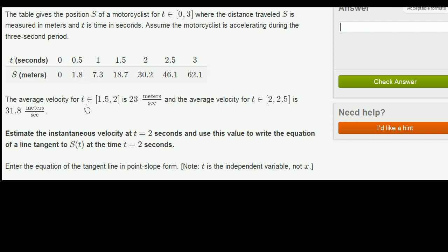The average velocity for t between 1.5 and 2 is 23 meters per second. So what they did over here is they figured out, well, what is delta s over delta t in this interval? And they figured out that it was 23 meters per second.